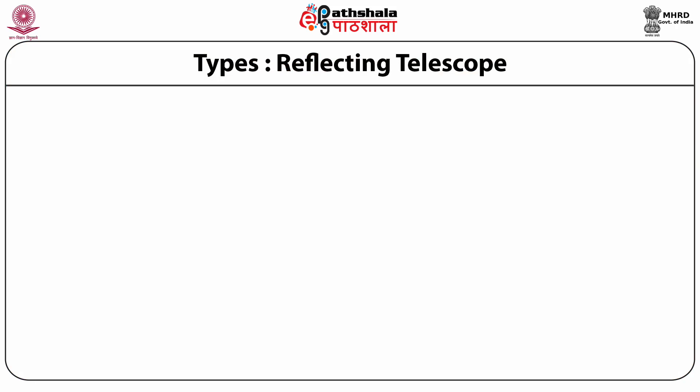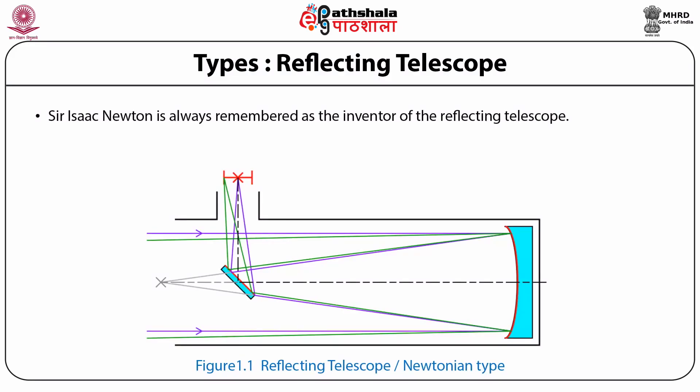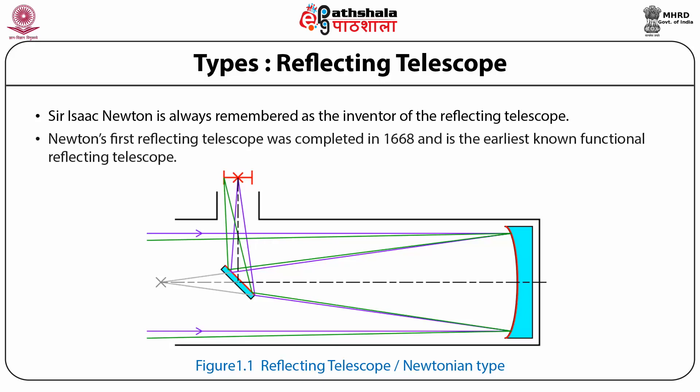Telescopes are broadly classified into two types: the reflecting telescope and the refracting telescope. For the reflecting telescope, Sir Isaac Newton is always remembered as its inventor. The Newtonian telescope is a type of reflecting telescope using a concave primary mirror and a flat diagonal secondary mirror. Newton's first reflecting telescope was completed in 1668 and is the earliest known functional reflecting telescope.